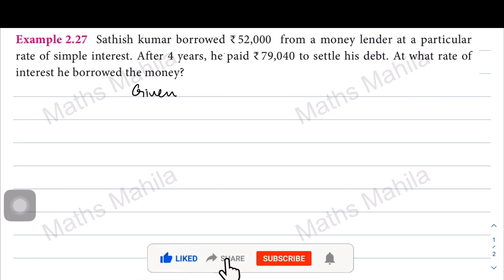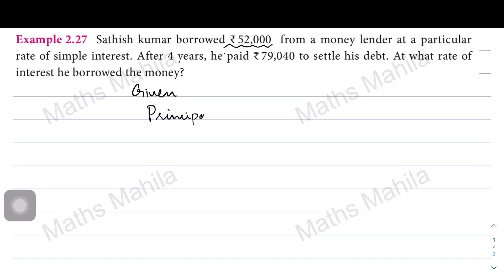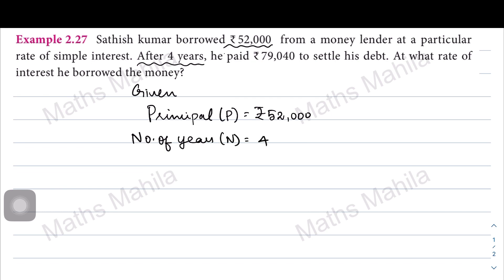From the given information: the borrowed money, that is the principal P, is equal to rupees 52,000. The number of years is 4 years. He paid back that amount — which is principal plus interest — and that amount A is equal to rupees 79,040. Now we need to find the rate of interest.